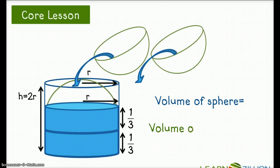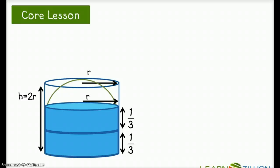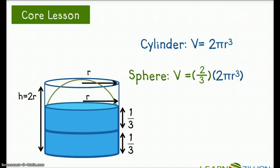So let's develop this into a formula. We know the volume of a cylinder is 2πr³. And now we know that the volume of a sphere is two-thirds of this. We can write our formula for the volume of a sphere as two-thirds multiplied by 2πr³.